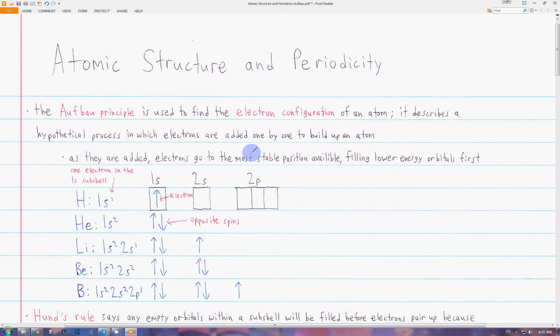The electron configuration of an atom tells us how many electrons the atom has and which orbitals those electrons are in.